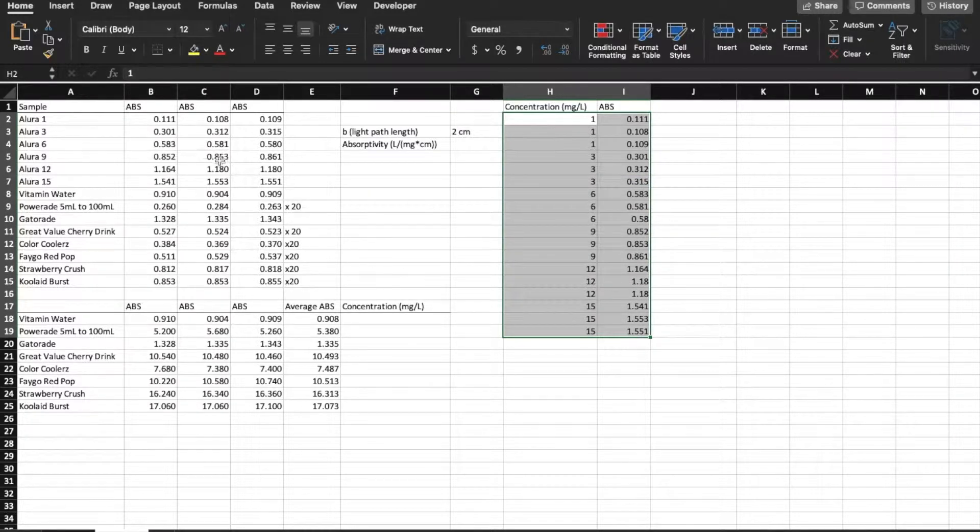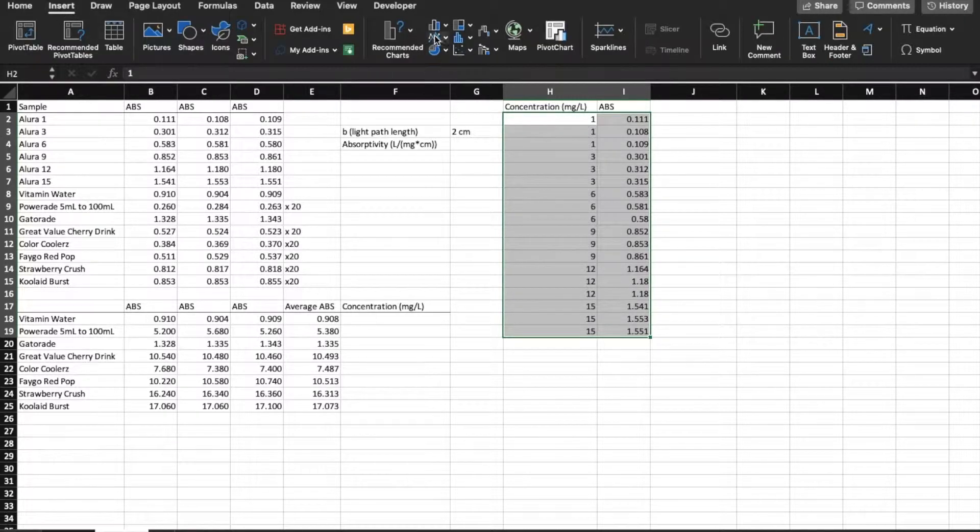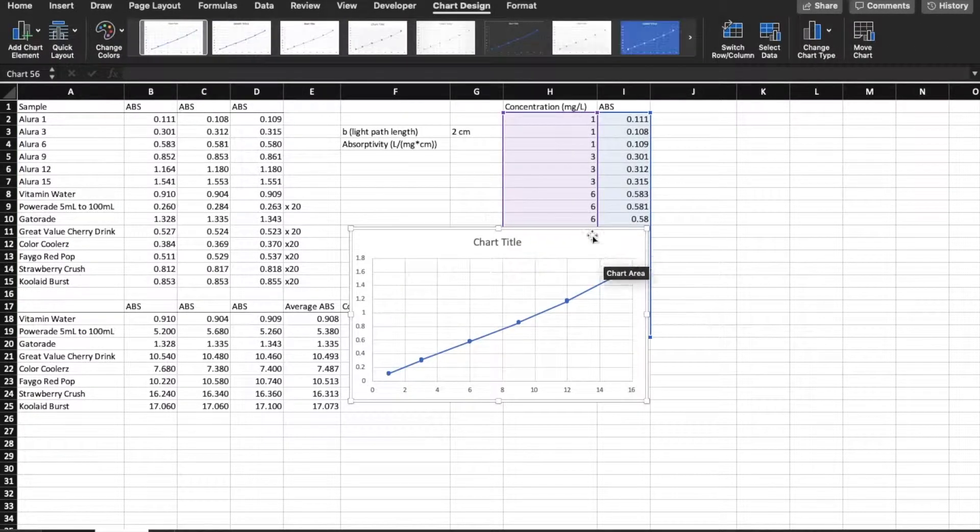First, all I did was move the concentrations for the stock solutions over to the right just in one graph so that I can easily graph it. So I'm going to highlight the data, insert a scatter plot.